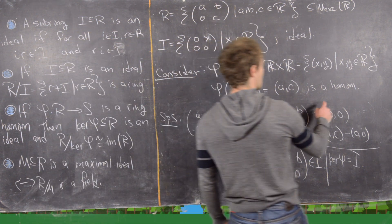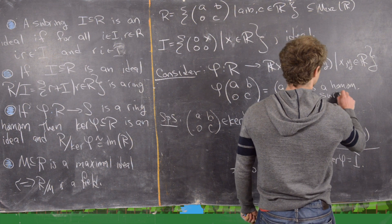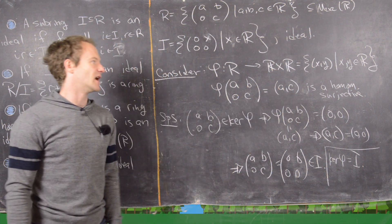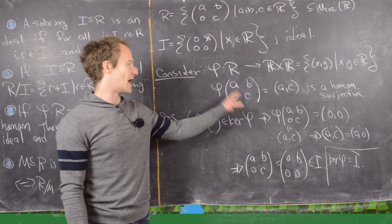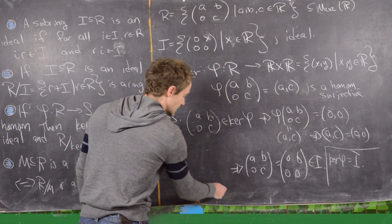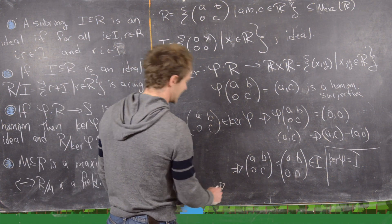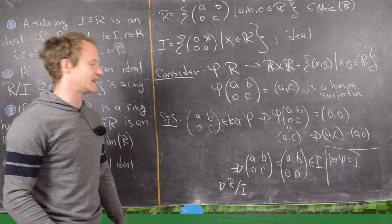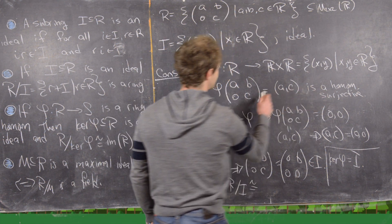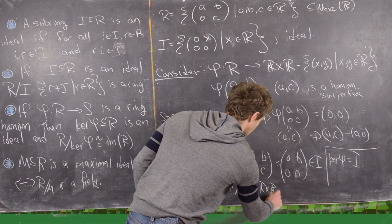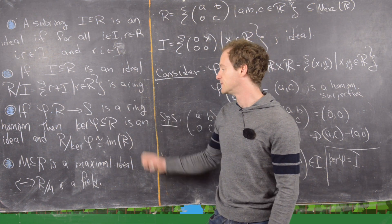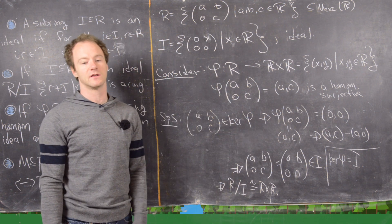Not only is φ a homomorphism, it is clearly surjective — any element (a,c) in ℝ×ℝ has a pre-image. So by the first isomorphism theorem for rings, R/I = R/ker(φ) is isomorphic to the image of φ, and since φ is surjective, that equals ℝ×ℝ.